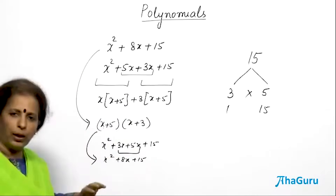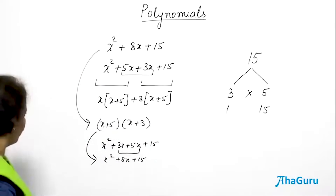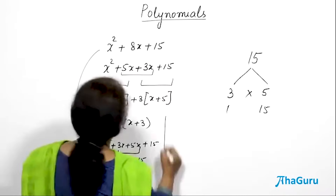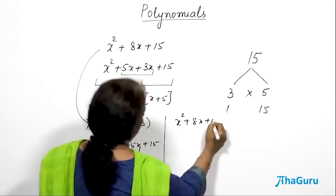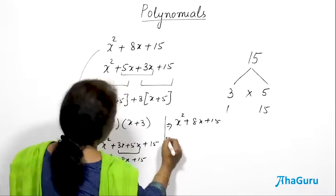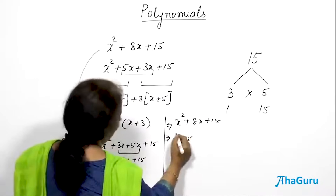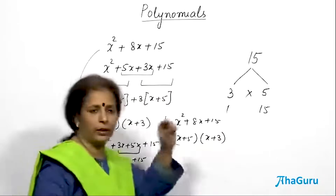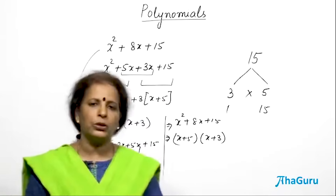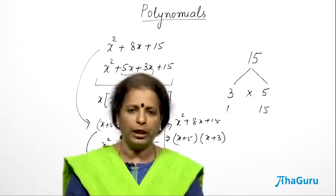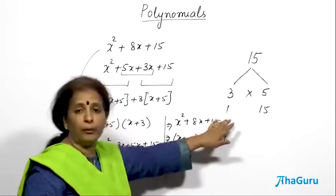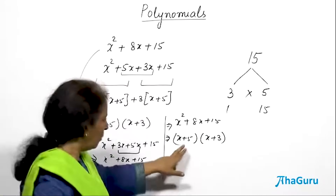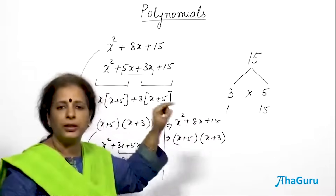We will be studying only about quadratic and cubic. So x² + 8x + 15 can be written as (x + 5)(x + 3). Factors are those algebraic expressions which, when multiplied, give us the original polynomial. Now, what is the zero of the polynomial? What will make this polynomial become 0?